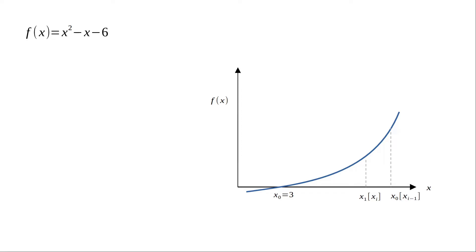At these two values we find the value of the function, then draw a secant through them and extend it to the x-axis. Where it meets the x-axis, f(x) = 0, and that point is xᵢ₊₁.